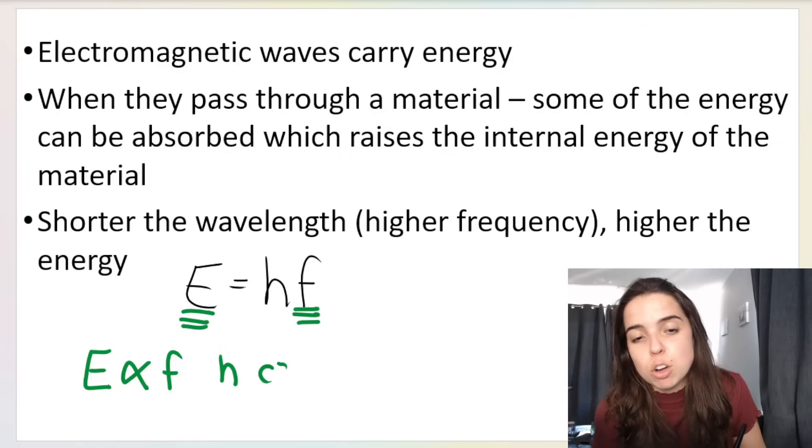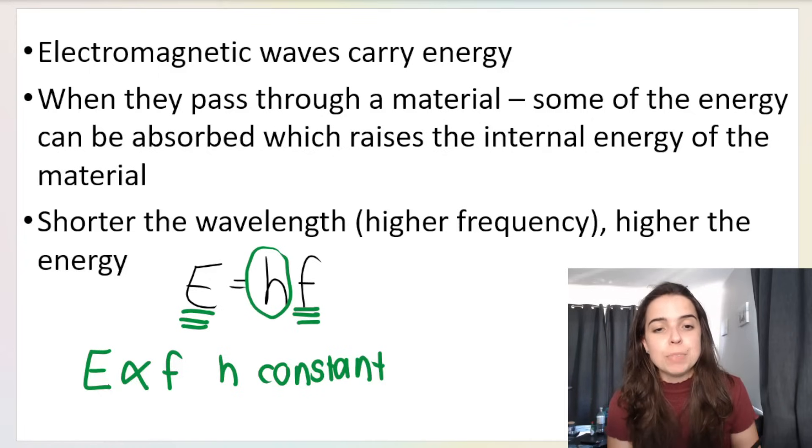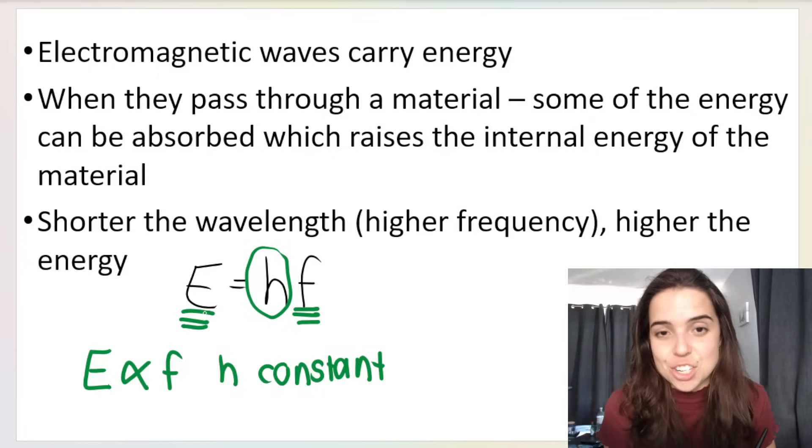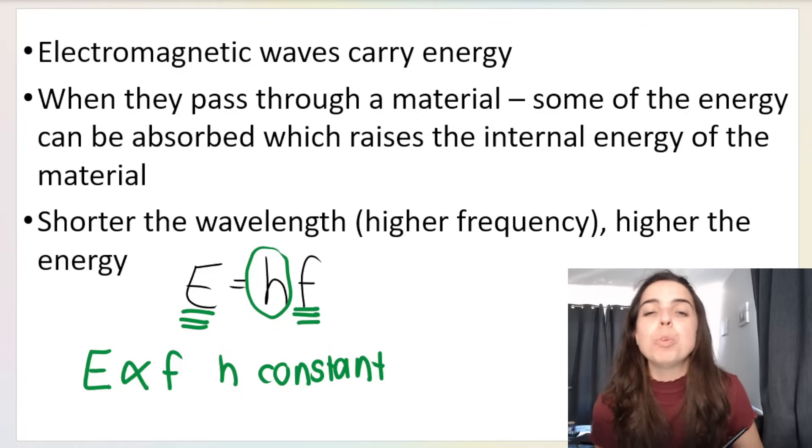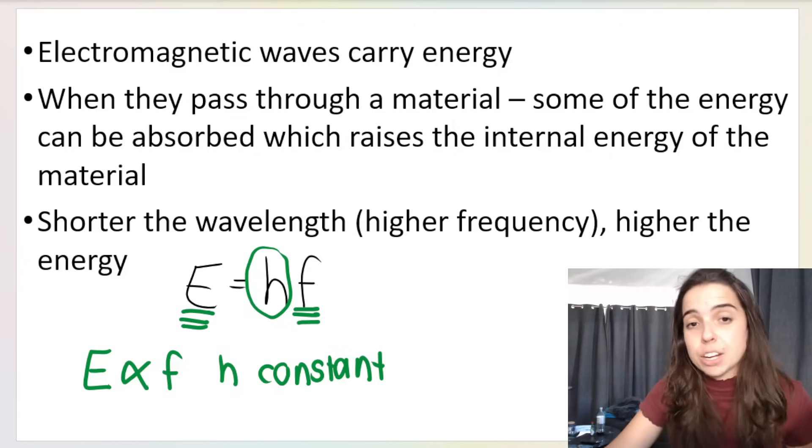But, H must be a constant in order for this relationship to be true, which it is. H is Planck's constant. It's always the same value. So, we know the higher the frequency of the wave, the higher the energy. And, if you watch the previous video, you will know that gamma rays have the highest frequency, which means they have the highest energy. And, that's why gamma rays are the most dangerous type of electromagnetic radiation.